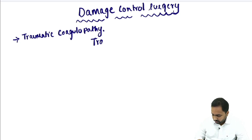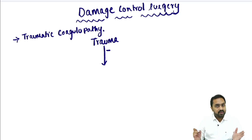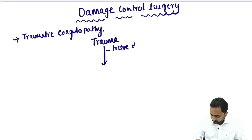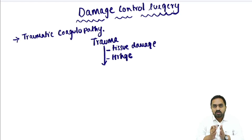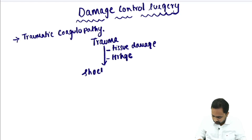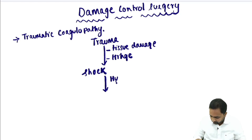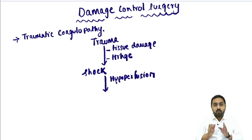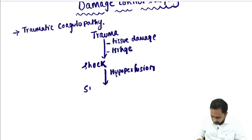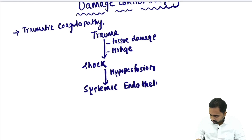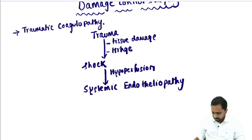Imagine there is a trauma following which we have tissue damage and hemorrhage. As a result of this, the patient is going to have shock. Shock is the state of hypoperfusion, and this hypoperfusion is going to lead to systemic endotheliopathy.